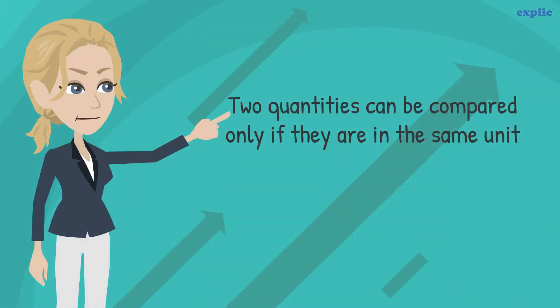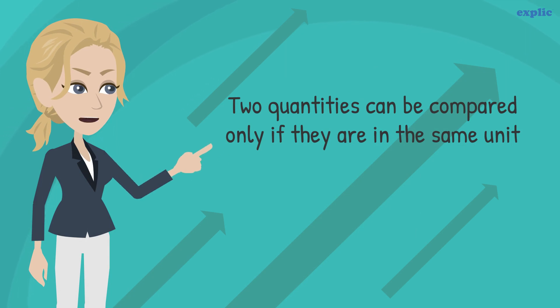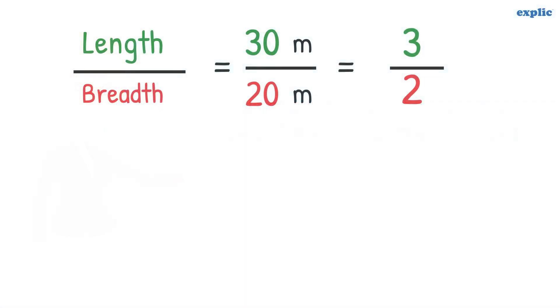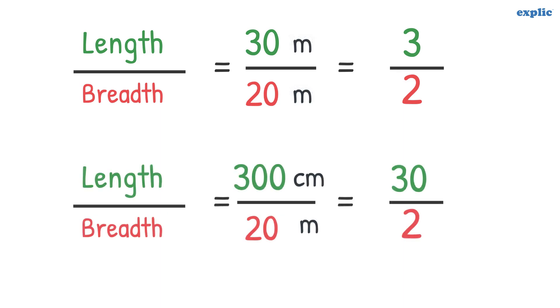Remember, two quantities can be compared only if they are in the same unit. For example, you can find out the ratio of the length and breadth of the room only if both measurements are in meters or centimeters. If they are not in the same unit, the ratio obtained is wrong.